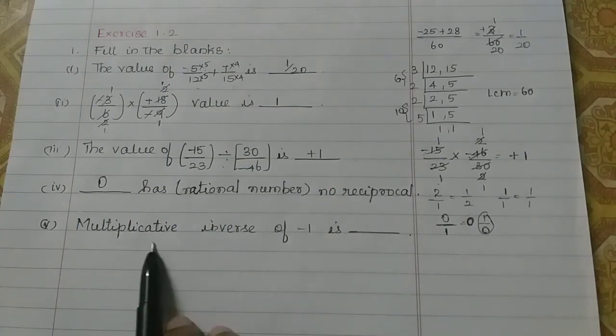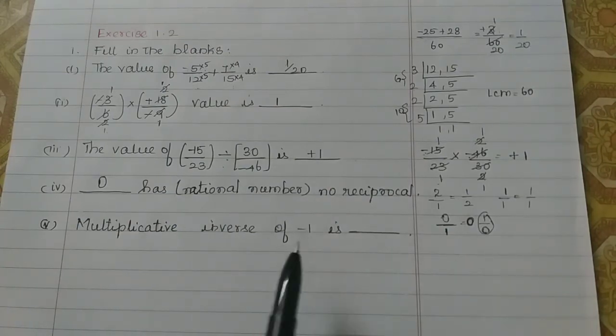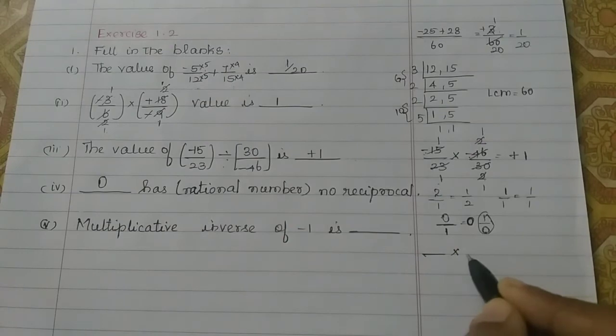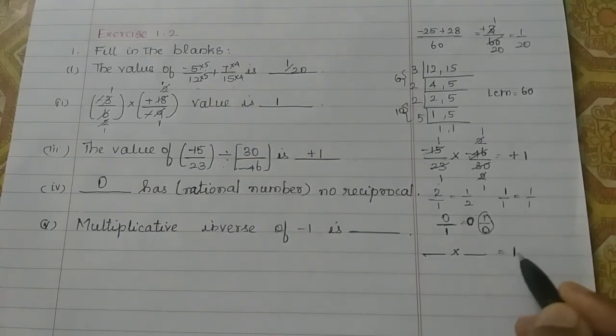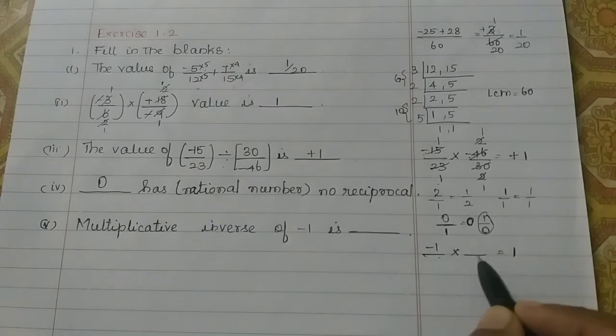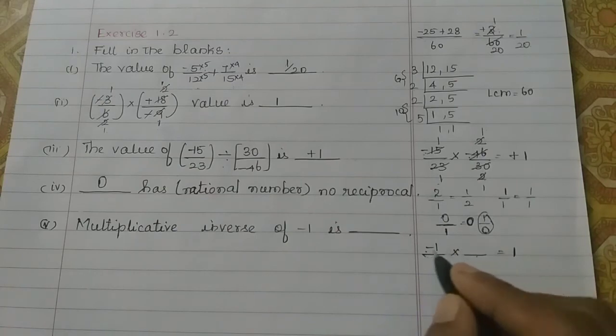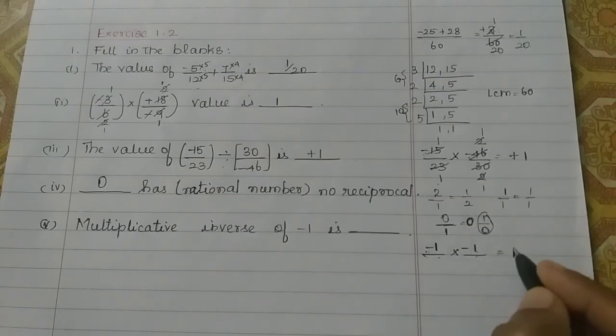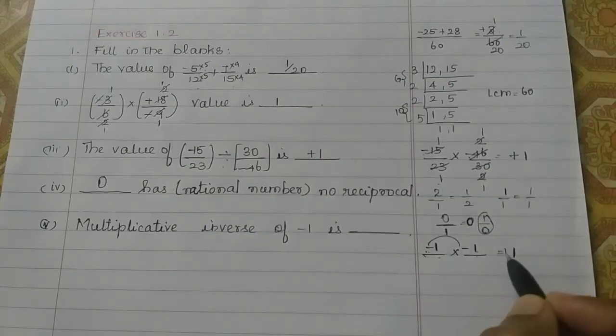Next, multiplicative inverse of minus 1. What does it say? What number we multiply is 1. Now we have minus 1. What we multiply is 1. How do we multiply? Multiplicative is the same symbol. If there is 1, we multiply minus 1. Then minus into minus plus 1. This is the answer.